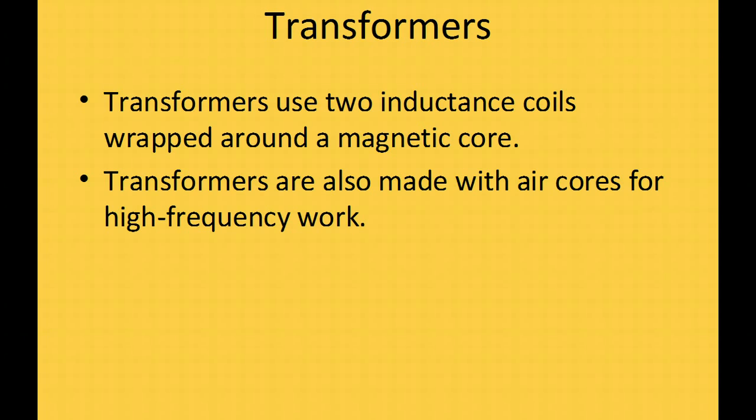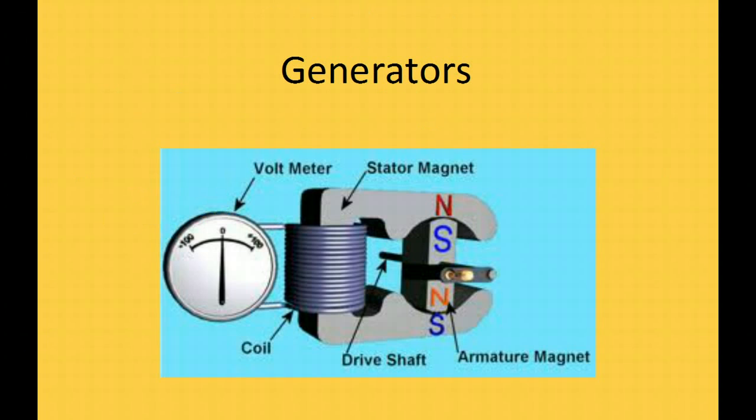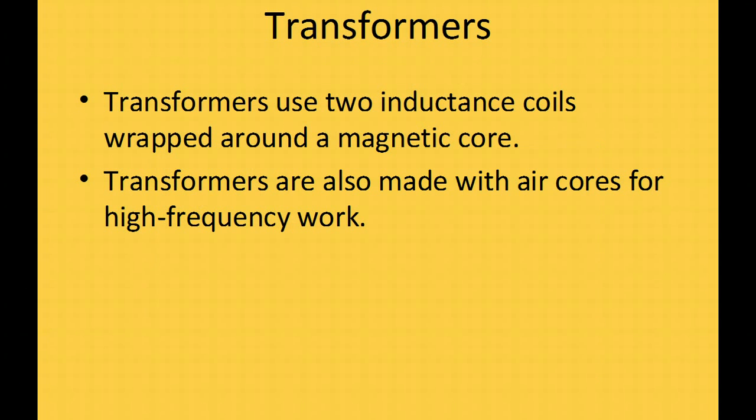So, transformers. Let's get on to transformers. Remember I said when we generated power, it was done through induction. Transformers have two inductance coils wrapped around a magnetic core, similar to the generator where we have one coil wrapped around a magnetic core. With the transformer, we have two. Let's take a look at how that works.